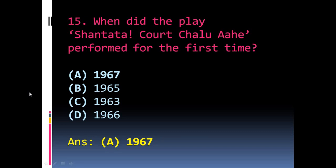Question 15: When did the play 'Shantata! Court Chalu Ahe' perform for the first time? The options are A) 1967, B) 1965, C) 1963, D) 1966. The right answer is A) 1967. Remember, it first appeared in 1963, but it was first performed in 1967, and it was translated into English by Priya Adarkar in 1974.